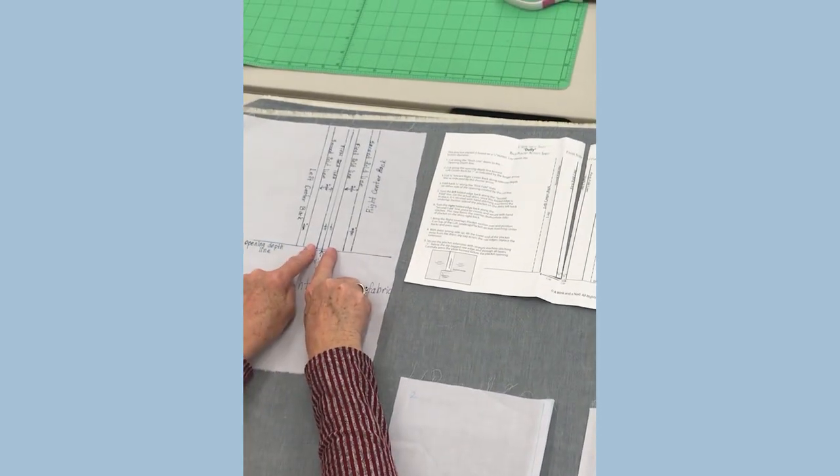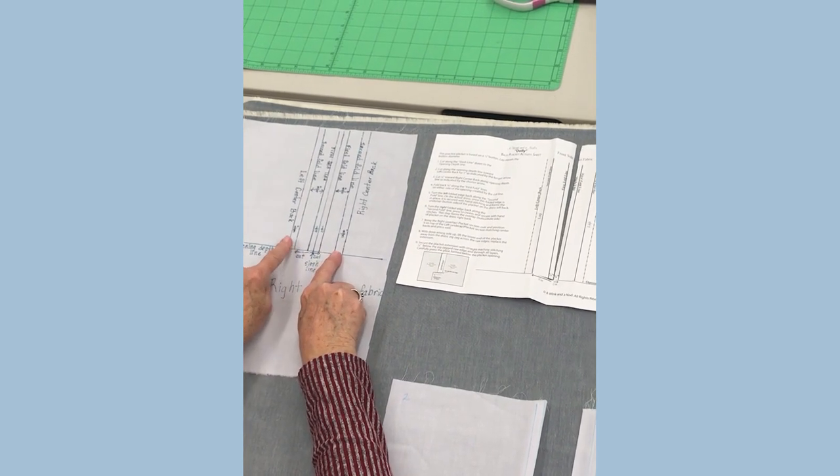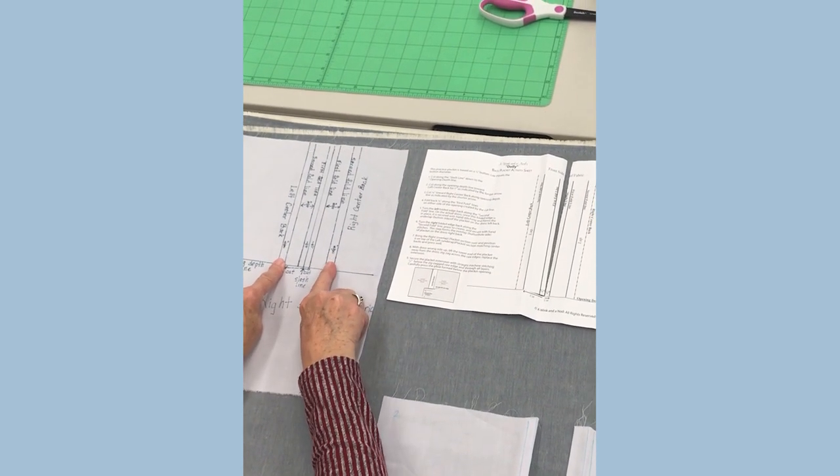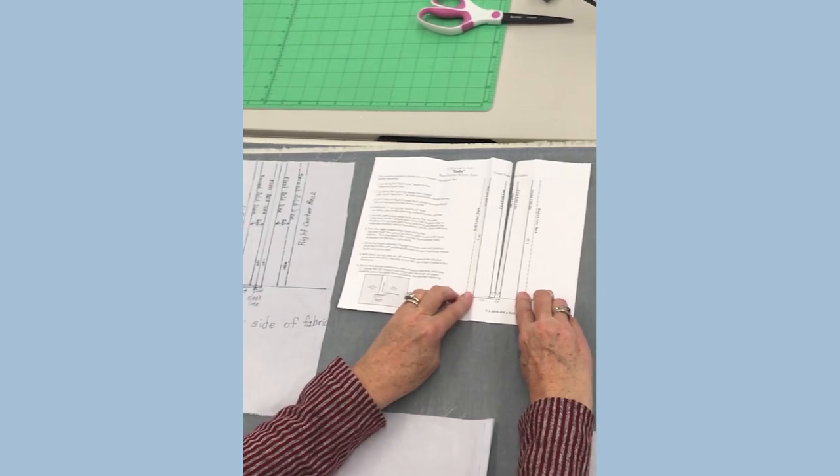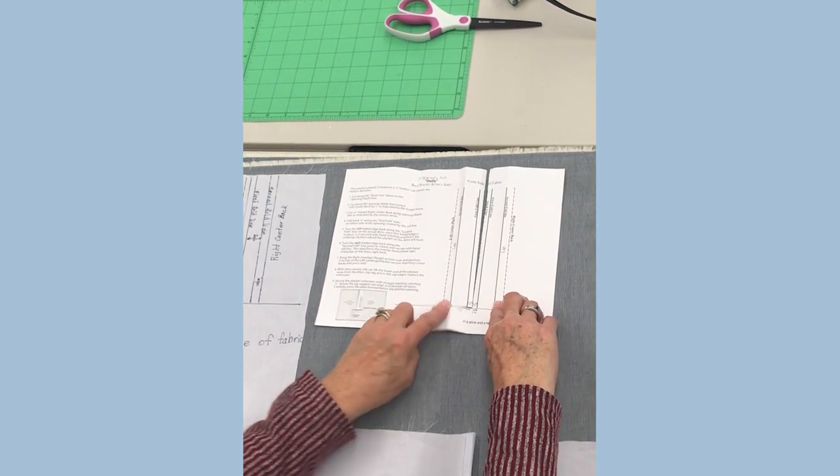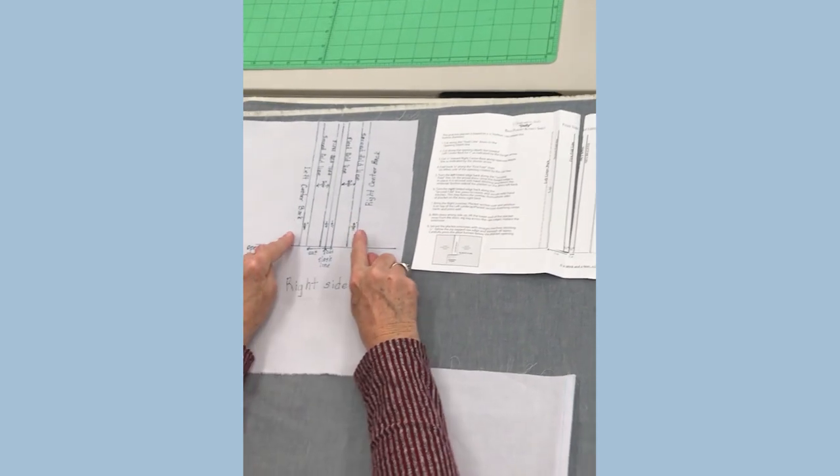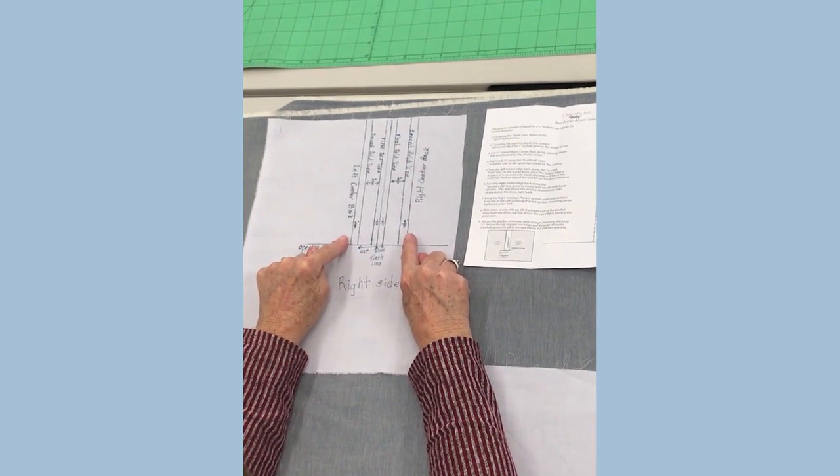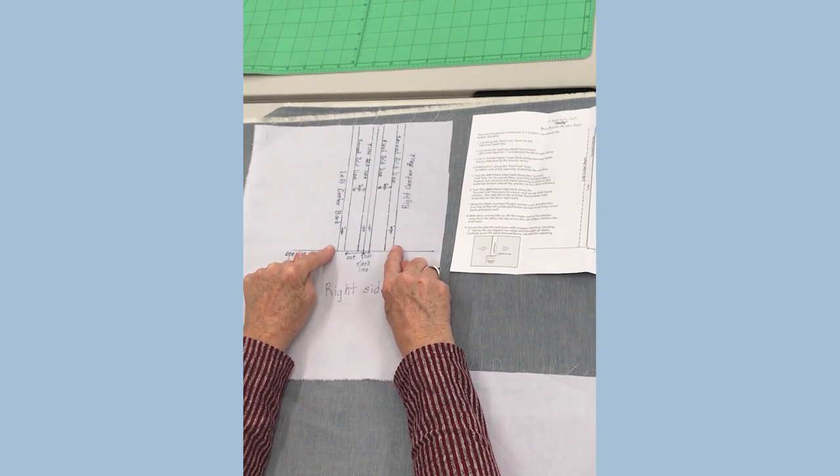After that, measure 3/4 of an inch over and draw another line, this one on the left and this one on the right. These are labeled second fold lines.